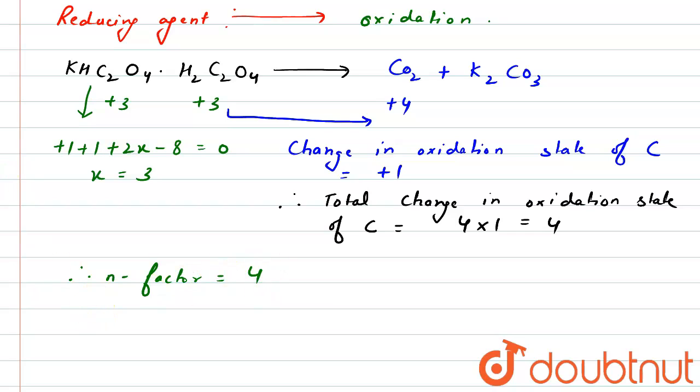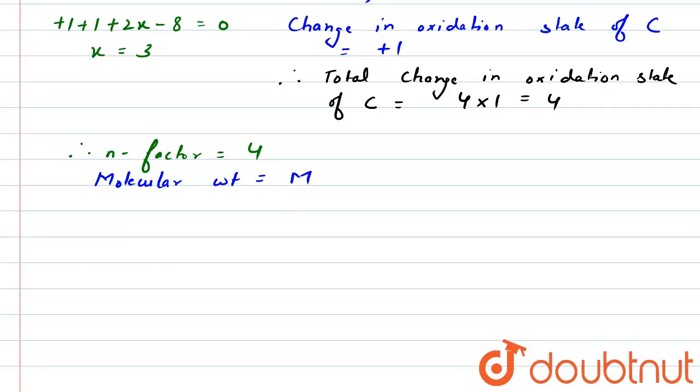Now, the molecular weight is given to us. Molecular weight is M. Now, the equivalent weight is equal to molecular weight divided by n-factor, which will be M divided by 4.